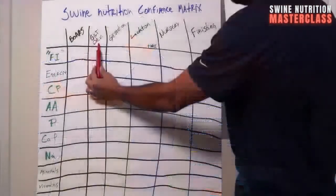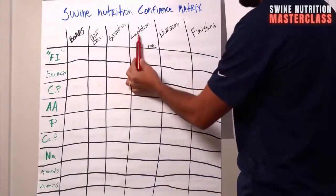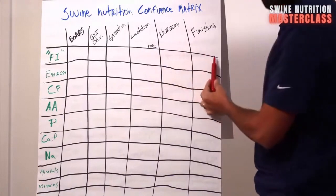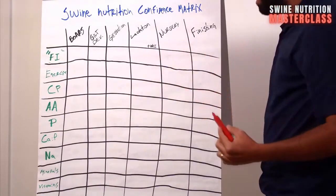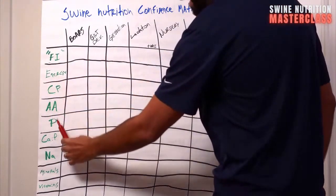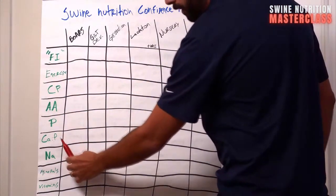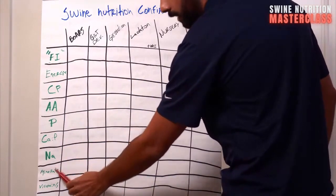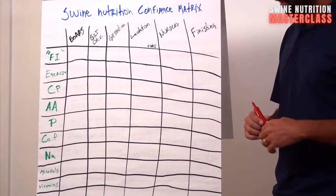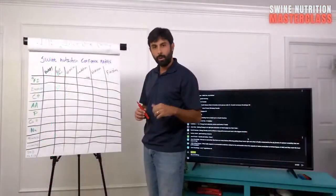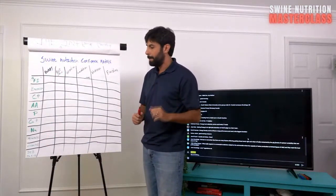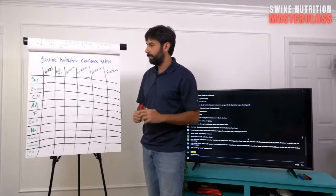All right, so here we have boars, gilt development, gestation, lactation. I even added a little bit of weaning-to-estrus interval, nursery, and finishing. And then I have feed intake, energy, crude protein, amino acids, phosphorus, calcium-phosphorus ratio, sodium, minerals, vitamins. And I even added the dietary electrolyte balance, which is basically a combination of sodium, potassium, and chloride in a given equation. There's a few different ways to measure that, and we're going to touch on that here shortly.